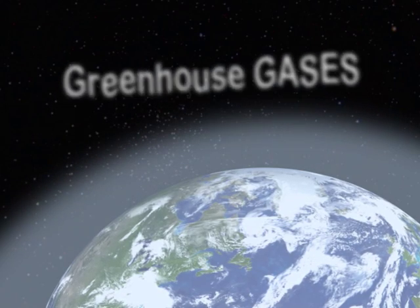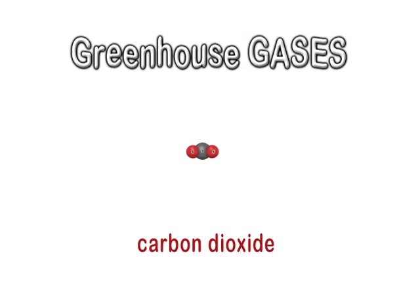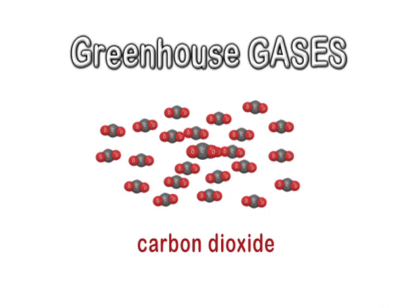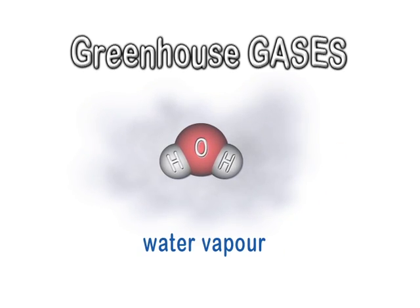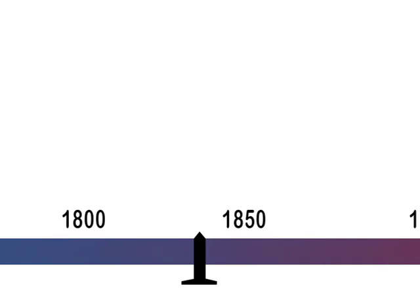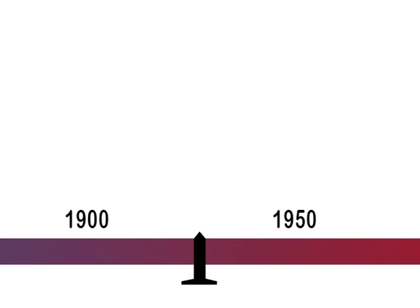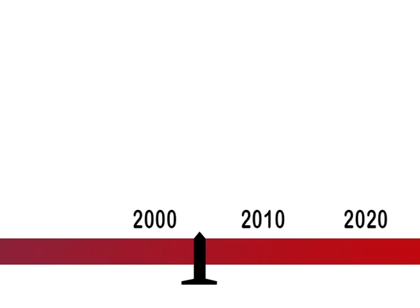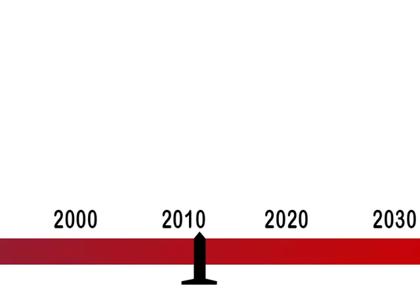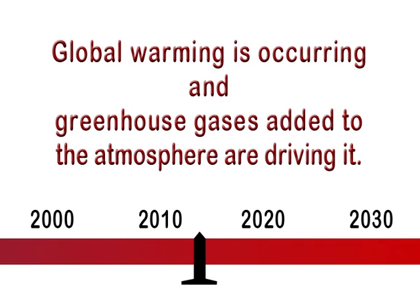In the case of greenhouse gases, some, like carbon dioxide, have been increasing at a rapid pace. But other gases, like water vapor, play a crucial role as well. Since the 19th century, when the first and largely theoretical research was done, scientists are now able to define with increasing precision the impact that such gases are having on changing Earth's climate. The result of their findings? Global warming is occurring, and greenhouse gases added to the atmosphere are driving it.